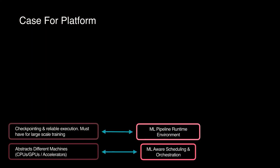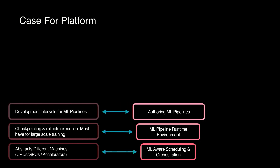On top of that, we're running large-scale distributed training jobs, and in this environment, failures are the norm. So how do we develop a platform and runtime environment that can provide resilient execution through checkpointing and reliability for these ML jobs? Machine learning engineers also need to develop their pipelines, so you need a set of development and deployment tools so they can author pipelines and deploy to production with ease. Collectively, we refer to these layers of platforms as the FB Learner Flow platform.